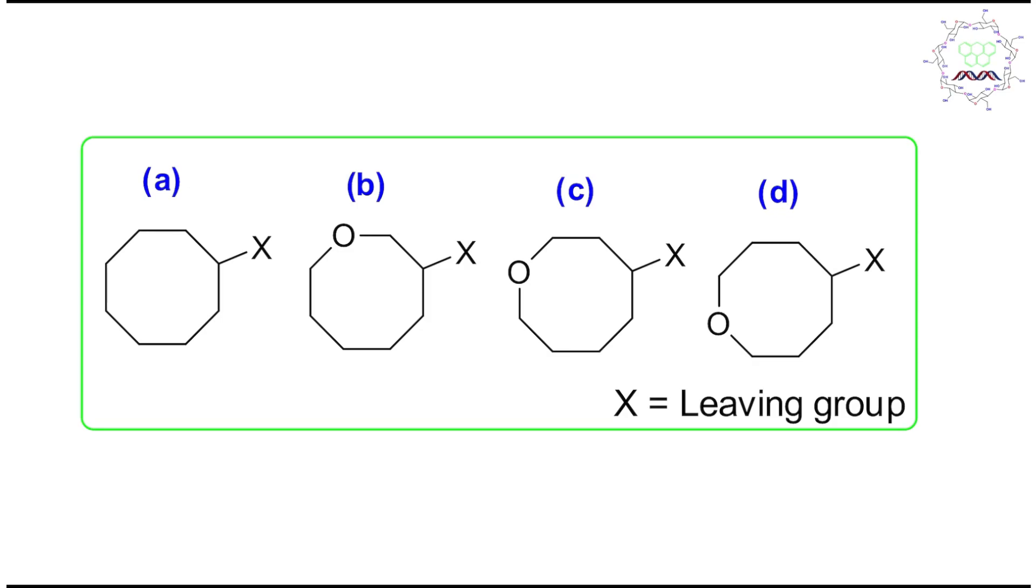Now if you look at X, X is actually a leaving group. For your simplicity, let me consider that X is a halogen leaving group like Br. So you can think that solvolysis with halogen leaving group, then what type of reaction? Actually, this is nothing but nucleophilic substitution.